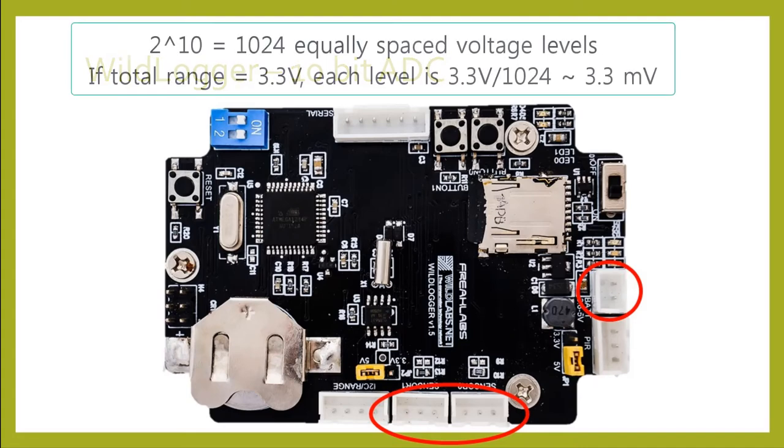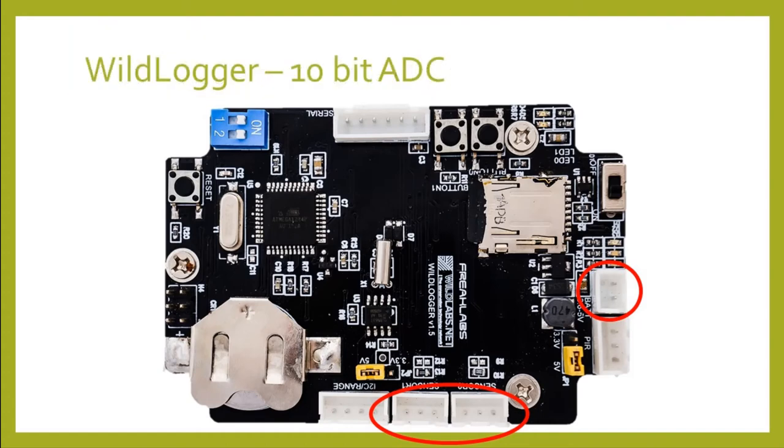Put another way, each unit of ADC value is equivalent to 3.3 millivolts, which is the minimum voltage the wildlogger's built-in ADC can resolve.